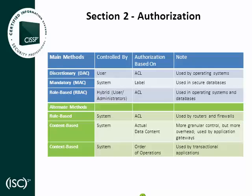Content-based access control is implemented in application gateways and client web browsers. Authorization methods can be used together to provide maximum protection — the two commonly implemented together are rule-based and content-based. For example, a parent wishes to protect her young son from the dangers of the Internet. She establishes rules on the home Internet router to deny access to specific Internet addresses, then configures the family desktop computer's web browser to deny access to any Internet file or web page that contains words she doesn't approve of. Performance will suffer because of the overhead involved in using both authorization methods, but the result is greater protection. Unfortunately, security and performance are trade-offs.